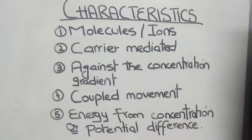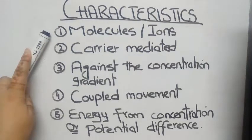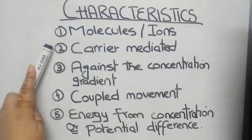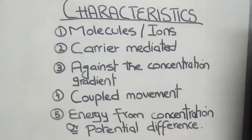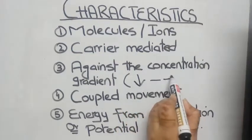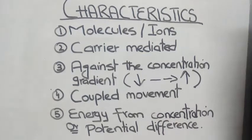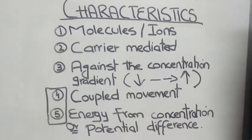The characteristics of secondary active transport are: it involves movement of molecules and ions across the cell membrane, and they need to be combined with a carrier protein — so it is carrier mediated. These molecules and ions are moved against the concentration gradient, from low concentration to high concentration. The fourth and fifth points are very important because they define secondary active transport and differentiate it from primary active transport.